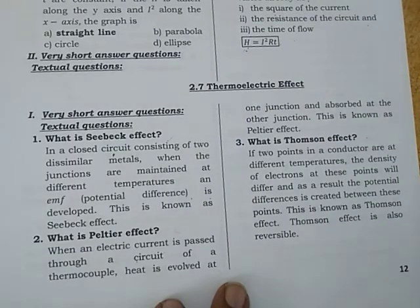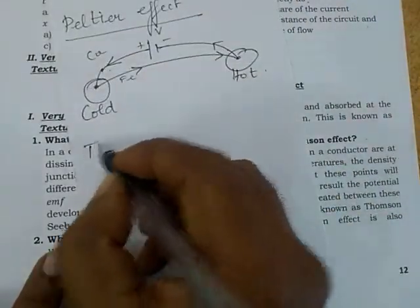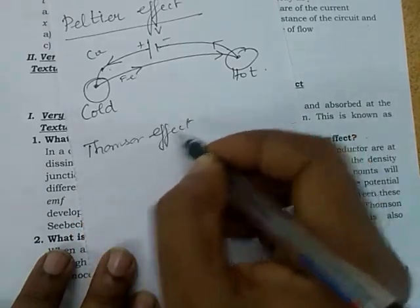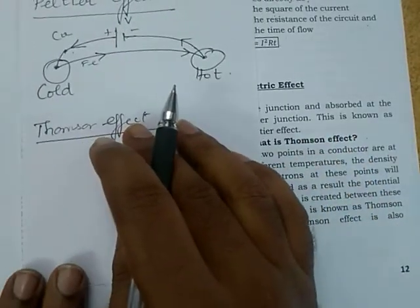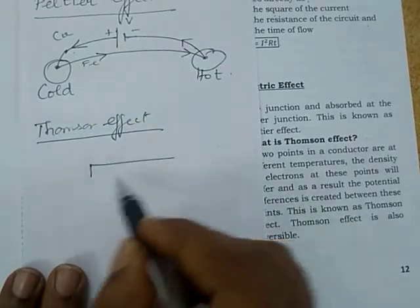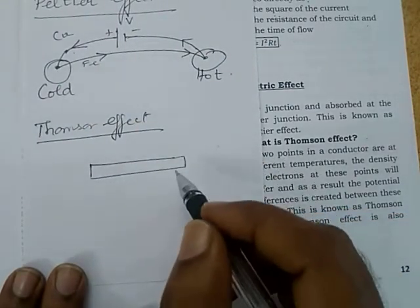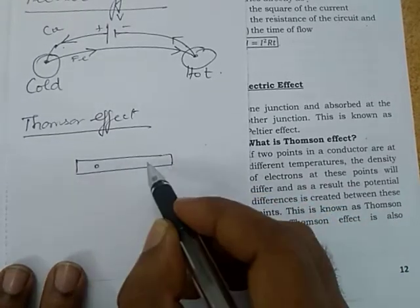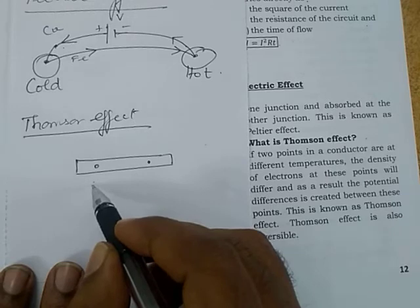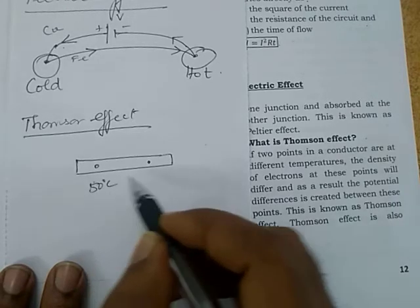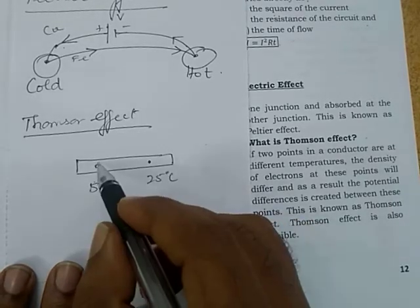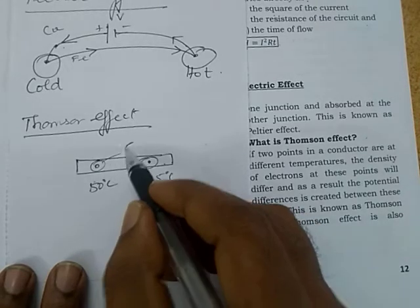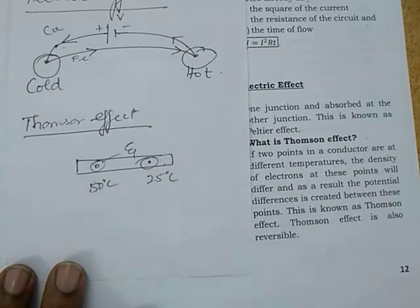Thomson effect in detail: consider a metal where two points are at different temperatures. There will be different electron densities at those points. Due to that difference, an EMF — that is a potential difference — is created.